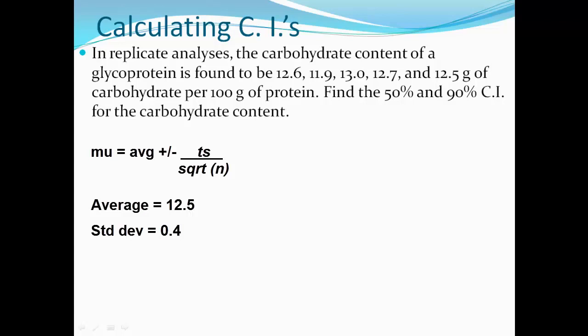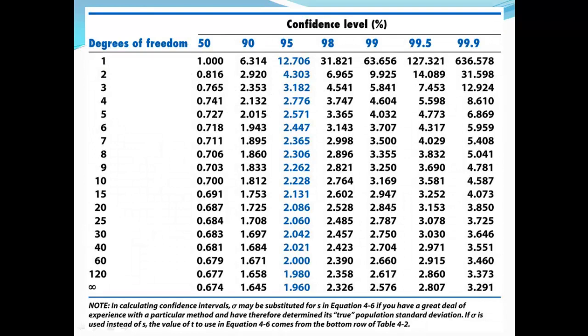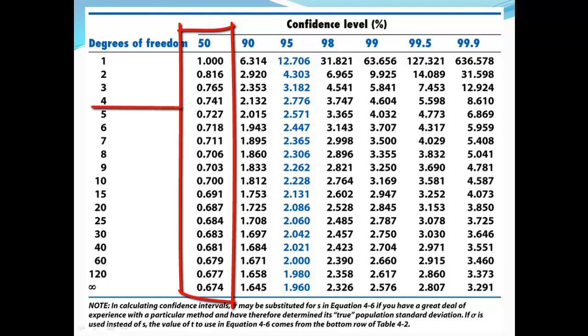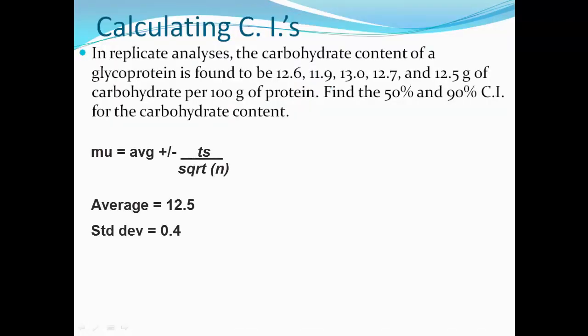Now, let's do the 50% first. We see that we have five measurements. So when we go to the table, we have to go to the 50% column. And then we use the degrees of freedom. So we don't use 5, we use N minus 1, which is 4. You see that the number that you use is 0.741. So that is what you plug back into your equation. So it should look something like 0.741 times 0.4, which is your standard deviation, divided by the total number of measurements, which is the square root of 5. If you multiply and divide all that out, you should get 12.5, that's your average.